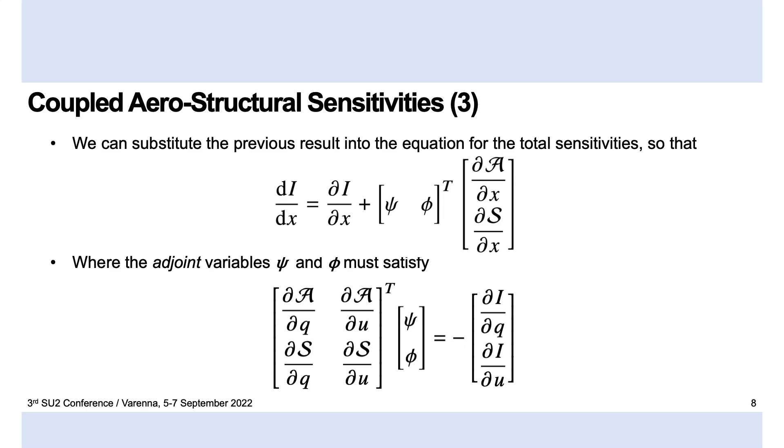And now, in this last system of equations, assuming we are able to obtain all of these partial derivatives within or without SU2, we are able to solve for the coupled aerostructural adjoints and we're able to use those to obtain our total sensitivity.